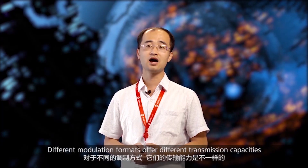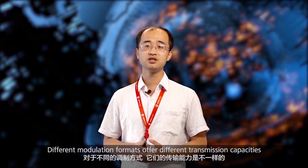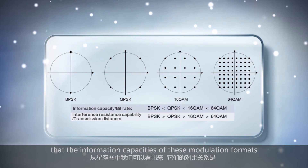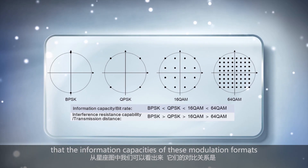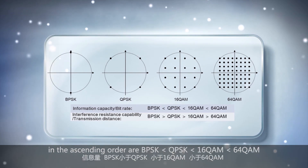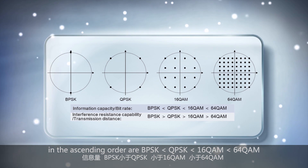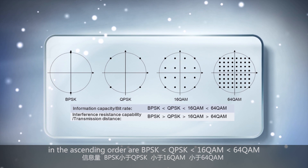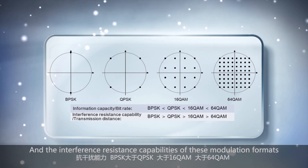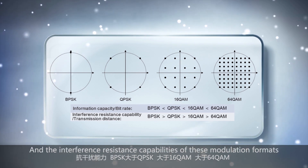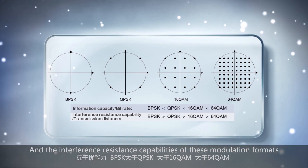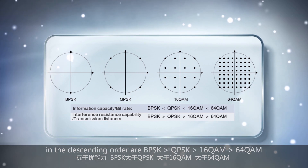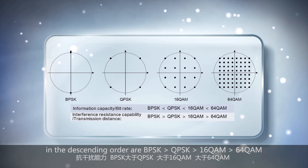Different modulation formats offer different transmission capacities. We can see from the constellation diagram that the information capacities of these modulation formats in ascending order are BPSK, QPSK, 16QAM, and 64QAM, while the interference resistance capabilities of these modulation formats in descending order are also BPSK, QPSK, 16QAM, and 64QAM.